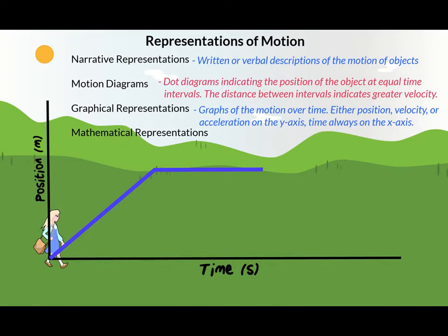When she runs back and slows to a walk partway there, she's going back to where she started, so the line must show a negative slope. Since she's running, the line must show her position changing at a faster rate than before, so it shows a steeper sloped line. When she slows to a walk again, the line is less steep to show a slower velocity.